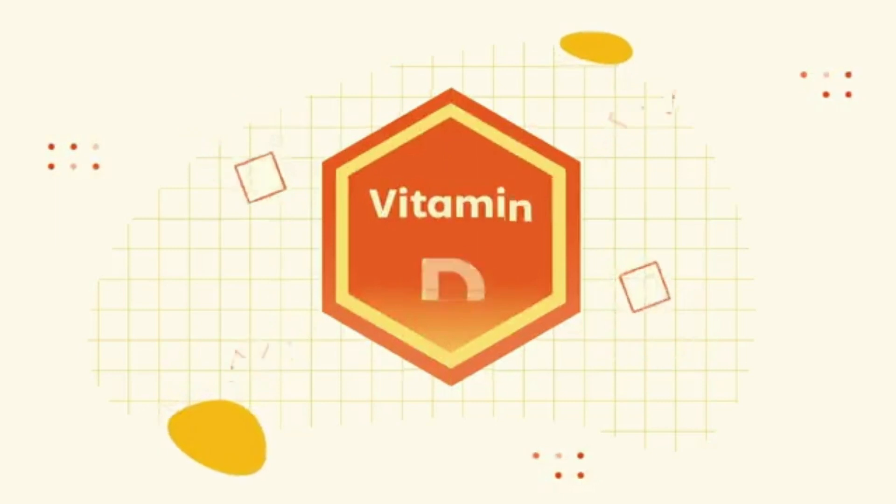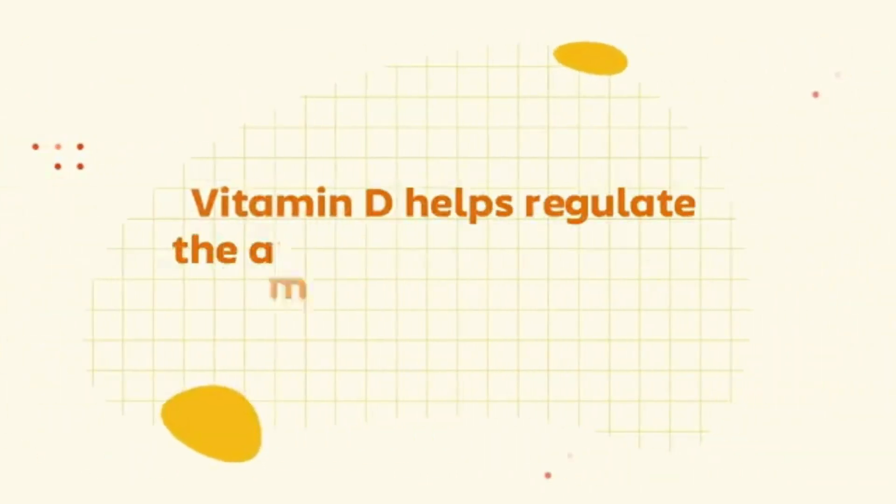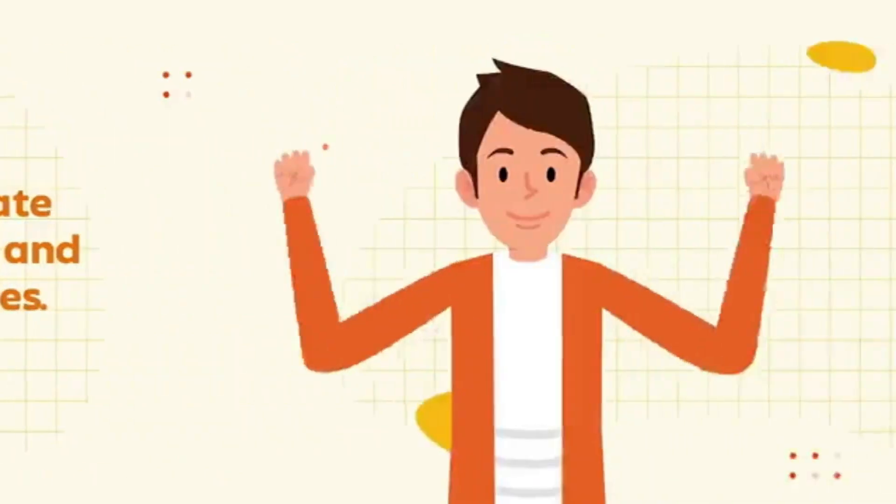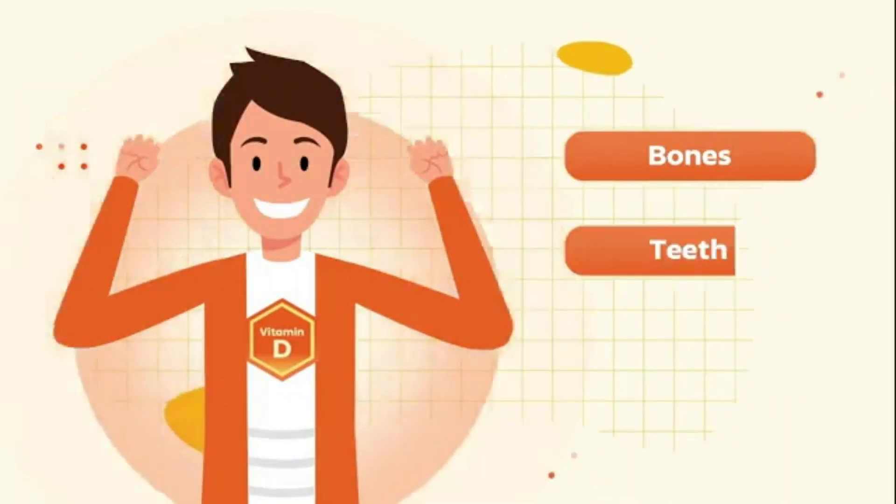Third, Vitamin D. Vitamin D helps regulate the amount of calcium and phosphate in our bodies. These nutrients are needed to keep bones, teeth, and muscles healthy.